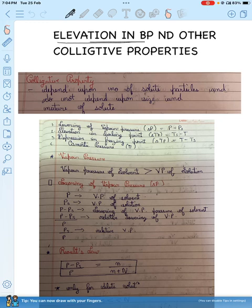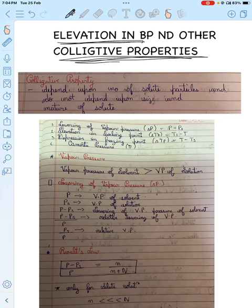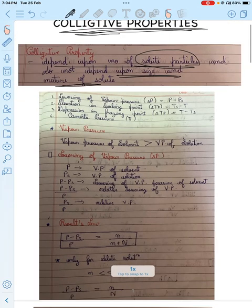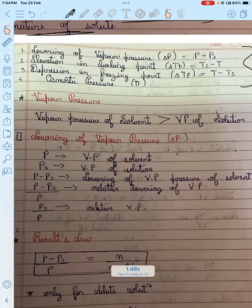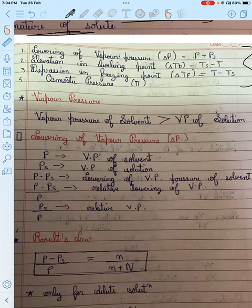The topic is elevation in boiling point and other colligative properties. Colligative properties depend upon the number of solute particles and do not depend upon size and nature of solute. There are four types of colligative properties: lowering of vapor pressure, elevation in boiling point, depression in freezing point, and osmotic pressure.